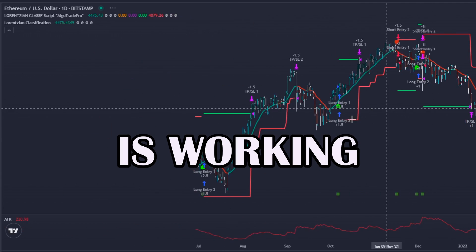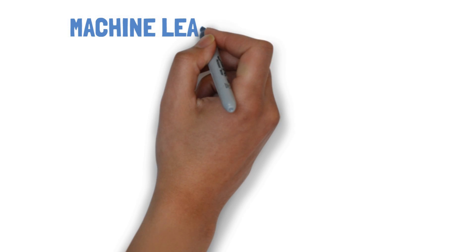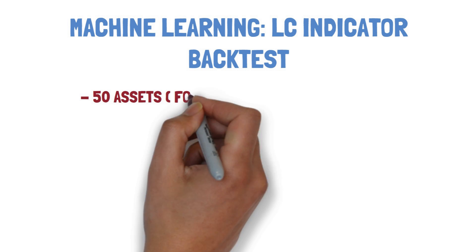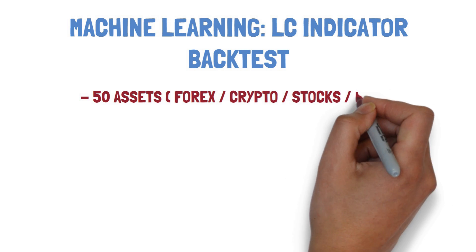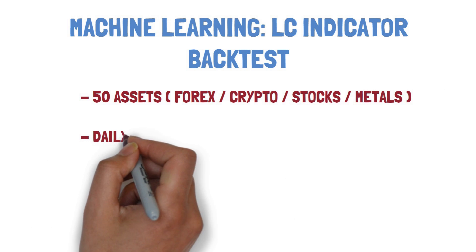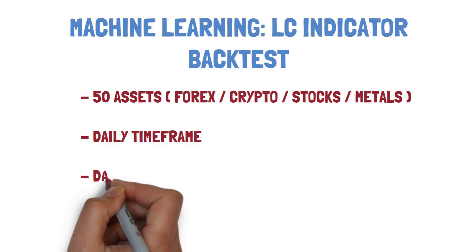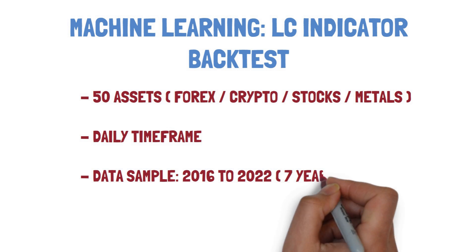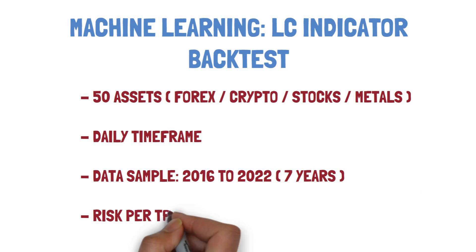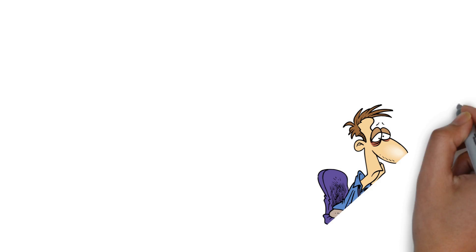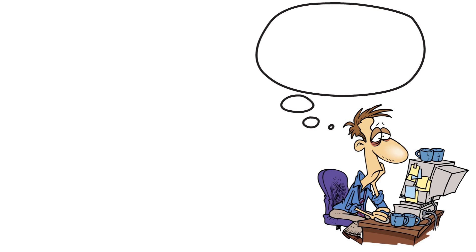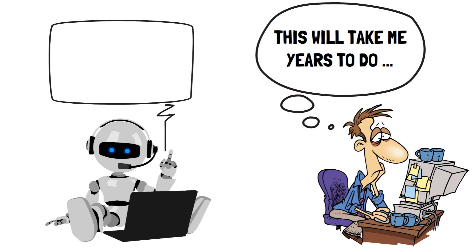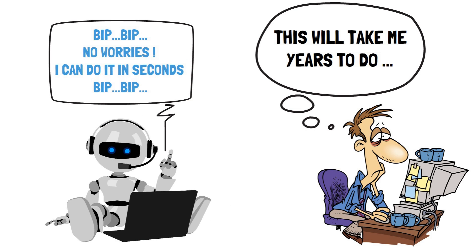For this backtest I will use 50 different assets across the forex, crypto, stocks, and metals markets. I will use the daily time frame, data from the years 2016 to 2022, and two percent risk per trade. I know it is a huge backtest that would probably take months or even years to perform manually, but my bot can do it much quicker. Stay tuned to see all the results.